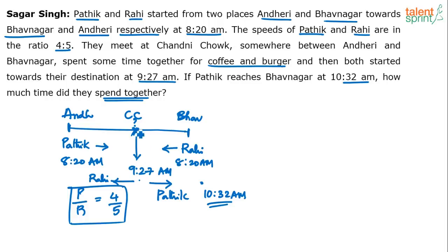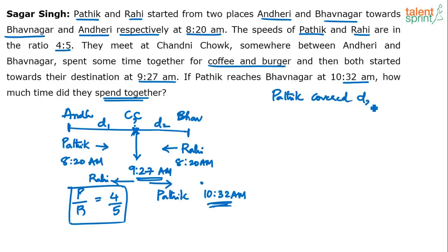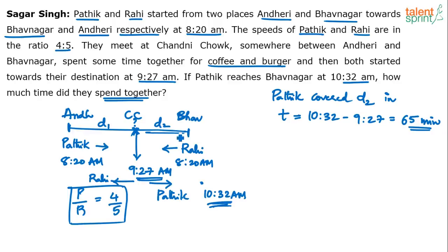Let's now focus on the meeting at Chandni Chowk. After the meeting, both started at 9:27am. Pathik reached Bhavanagar at 10:32am, which means Pathik spent 9:27am to 10:32am — that's 1 hour and 5 minutes, i.e., 65 minutes — covering the distance from Chandni Chowk to Bhavanagar. Let's call that distance d2. So Pathik covered d2 in 65 minutes.